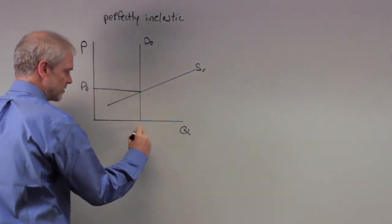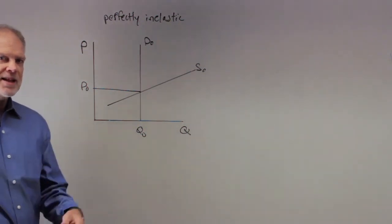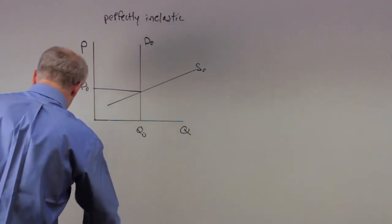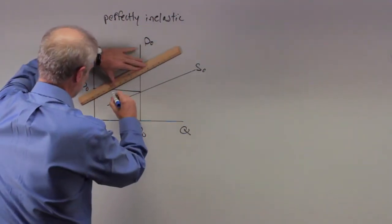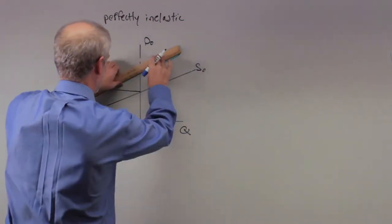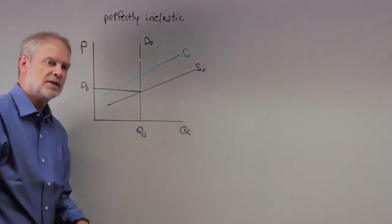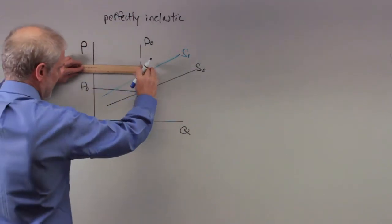And now they say supply decreases. Well we know supply decreases, it's a shift backwards in the supply curve. I'll use a different color just to give us some variety here. The supply curve decreases, so now you go from S0 to S1.